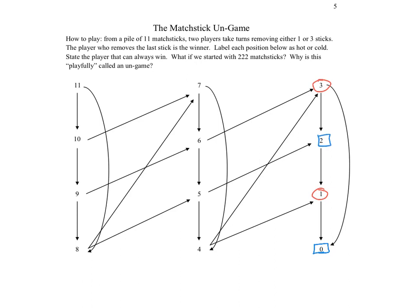As soon as we discover that two is cold, we work backwards and say five is now hot because it plays into that cold position. For position four: it plays into a hot and the other way of playing also goes into a hot, making position four cold. Working backwards along the arrow from four, seven is hot. From six, we play into three (hot) or five (hot), making six cold.